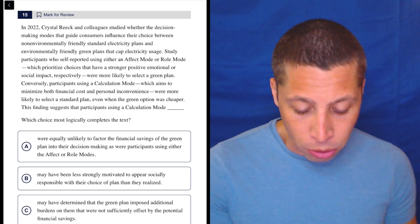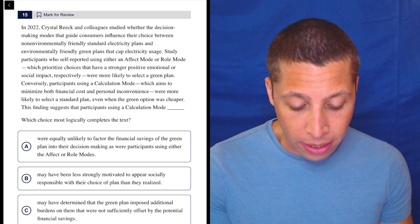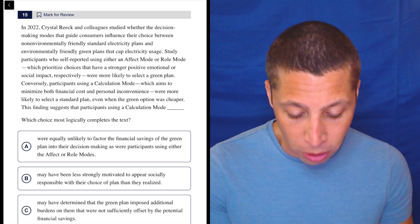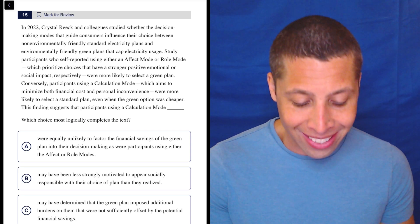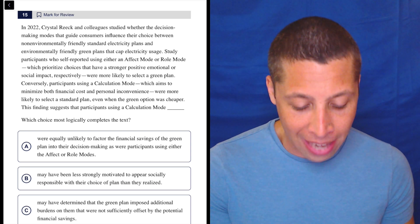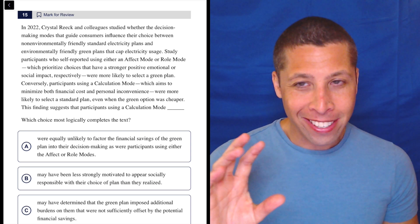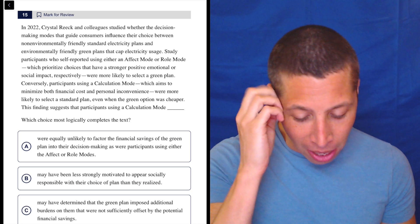In 2022, Crystal Reek and colleagues studied whether the decision-making modes that guide consumers influence their choice between non-environmentally friendly standard electricity plans and environmentally friendly green plans that cap electricity usage. Right now I haven't highlighted anything. There's a lot of details in there and I feel like they're going to matter, but I'll come back to them.